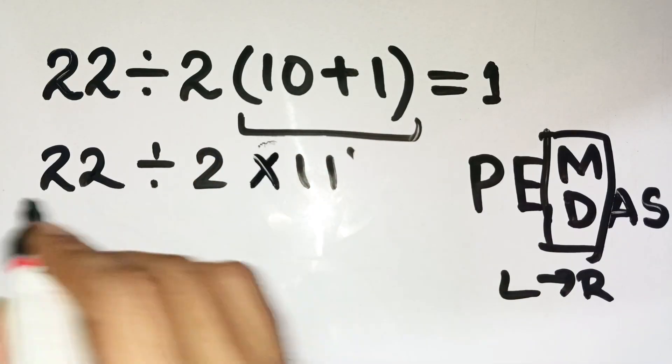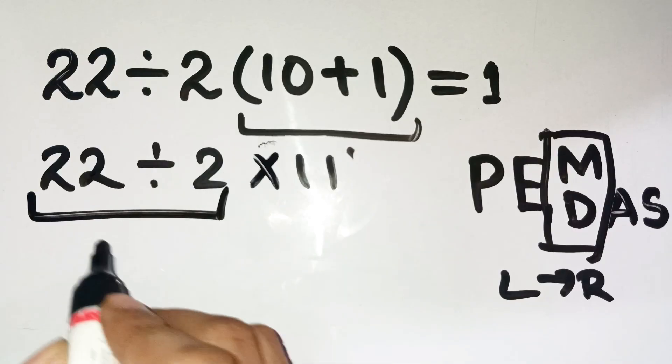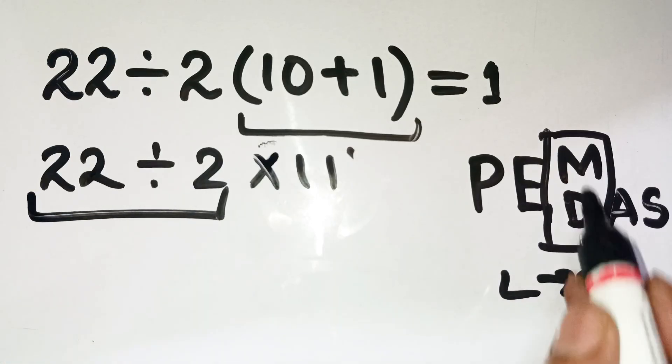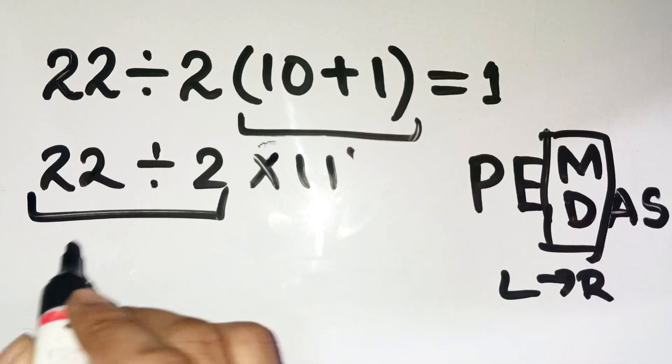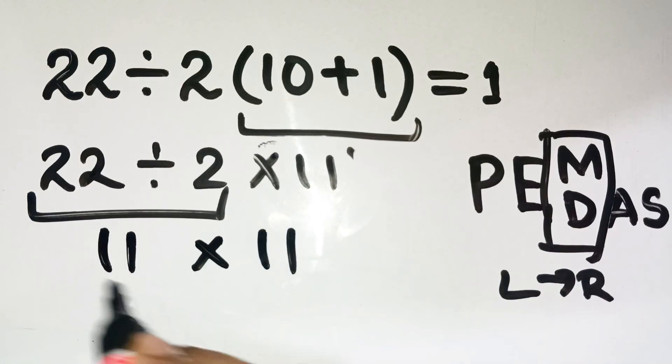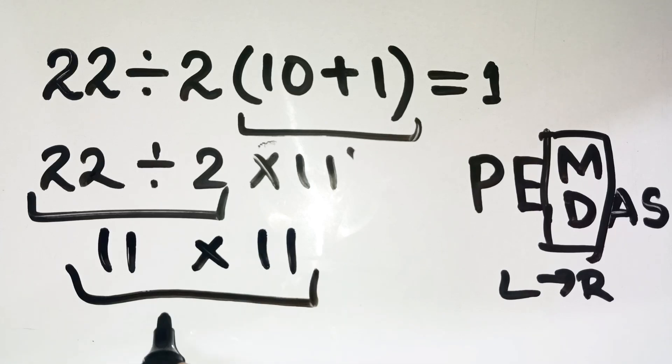Starting from the left, we have 22 divided by 2 times 11. See that? Division first, because it appears first. Now, 22 divided by 2 equals 11. Then multiply that by 11, and we get 11 times 11 equals 121.